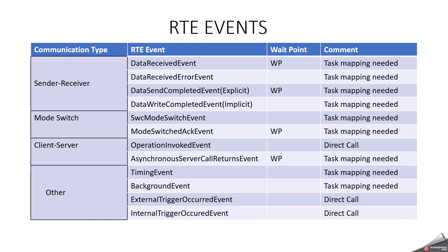From this slide you will get details about how we can handle the events — for example, whether the particular event has a wait point or not, and whether it has to be mapped with any task or not. Where I have mentioned 'task mapping needed,' the corresponding runnable entity is mapped to the task of the RTE event. Where I have mentioned 'direct call,' the runnable entity may be directly invoked by the initiating runnable and runs in the same task as the caller. Where I have mentioned 'WP,' it means wait point.